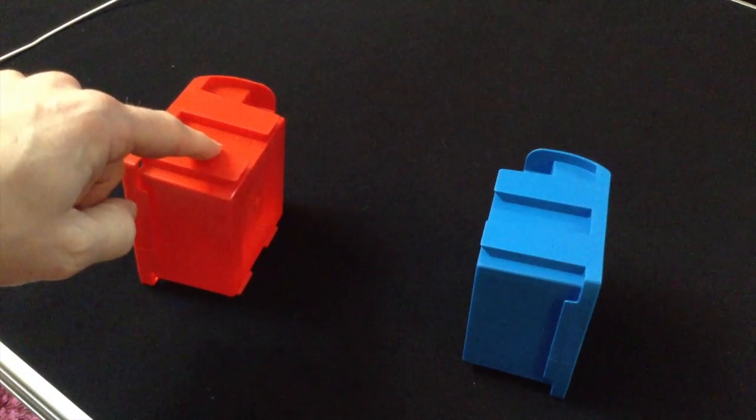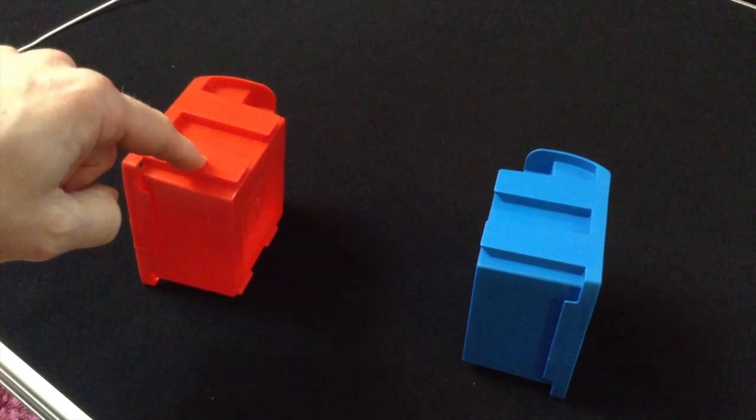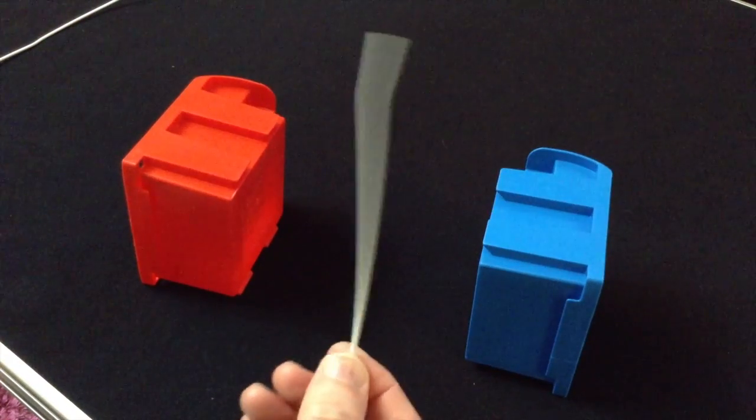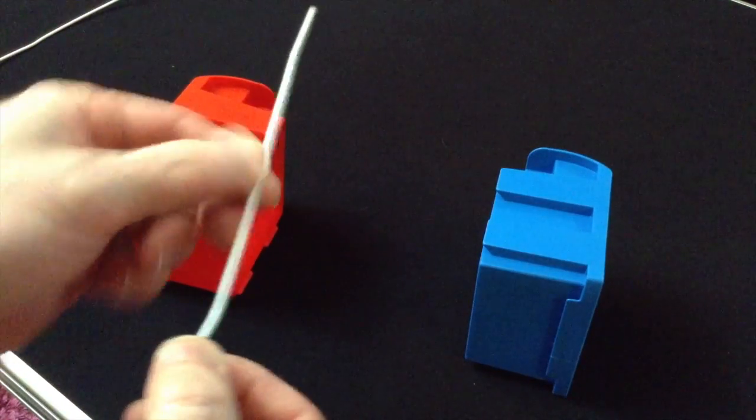So imagine, if you will, that this part bin here is our north magnet and this part bin here in blue is our south magnet, and this bit of old coat hanger is a wire.